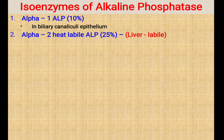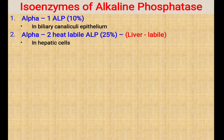The second important isoenzyme is Alpha-2 heat labile. Isoenzyme 2 comes in two varieties: Alpha-2 heat labile and Alpha-2 heat stable. The Alpha-2 heat labile type of ALP is particularly produced by the hepatic cells, or liver cells. Whenever there is injury or damage to the liver cell, Alpha-2 heat labile ALP level is increased, which represents 25% of the total alkaline phosphatase level in the blood.